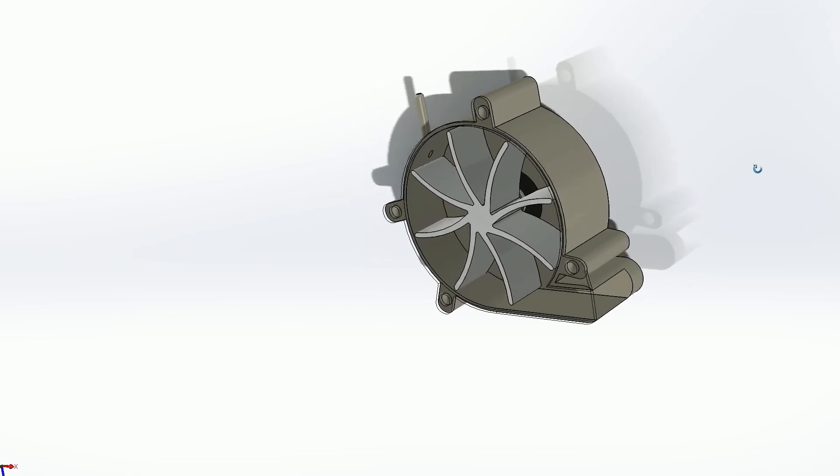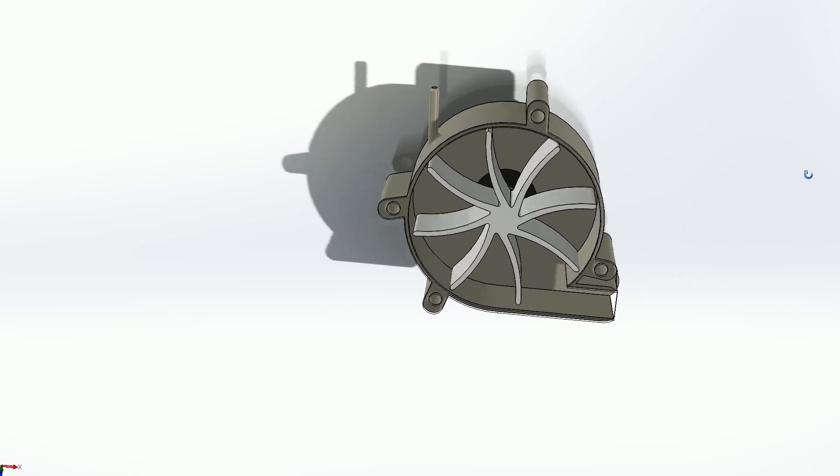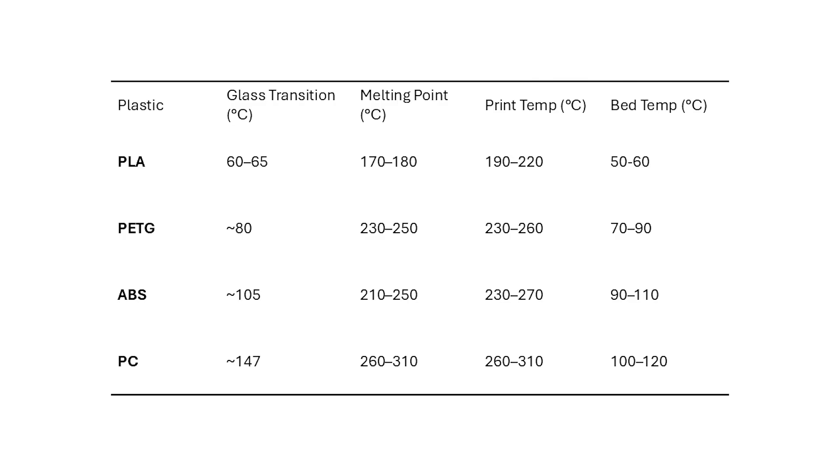As a starting point I just sketched some blades around a 5/8 bearing since that's what I had on hand from another project. For the material selection the tricky part wasn't necessarily finding a plastic with a high enough melting point, since all the plastics are greater than 100°C, it's the glass transition temperature.